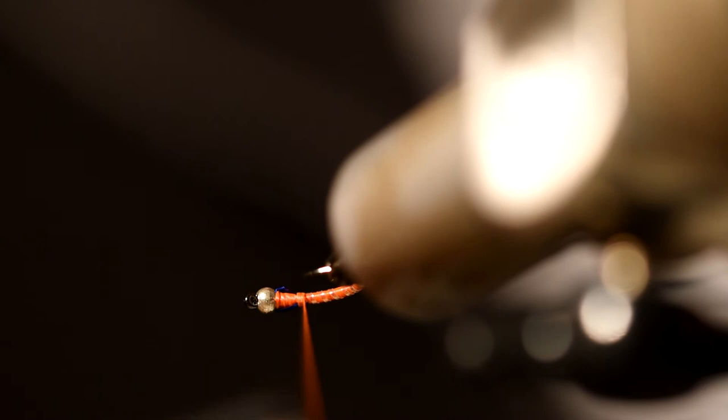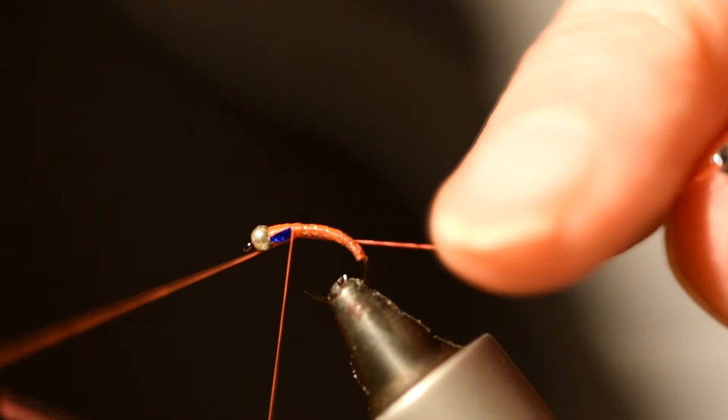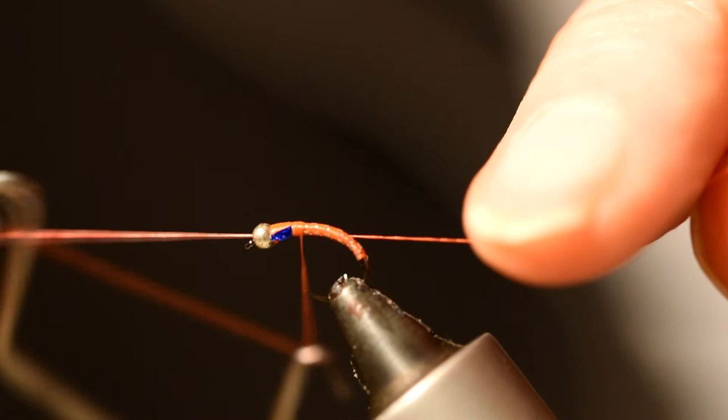Just a couple of turns to make it neat, then get your whip finisher or do your knot by hand. Try not to build up too much bulk in the process, keep it nice and tight, and nip off your excess thread.